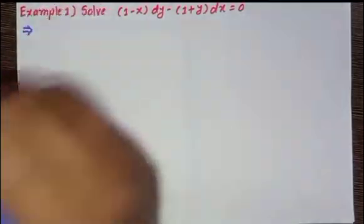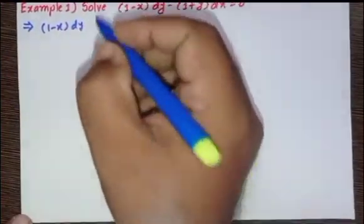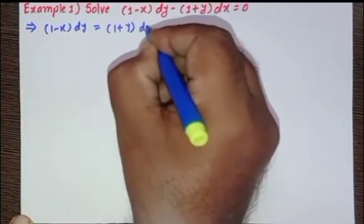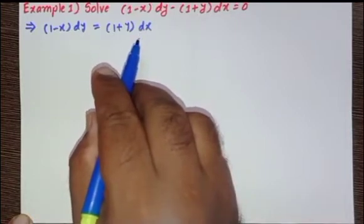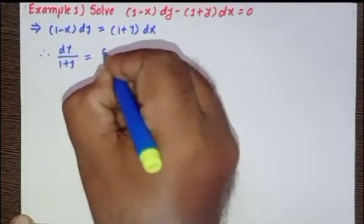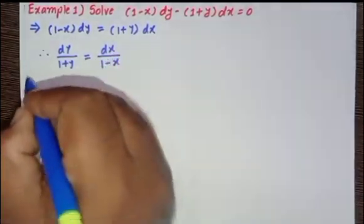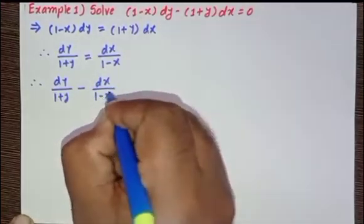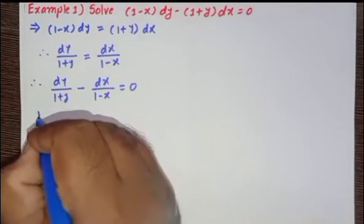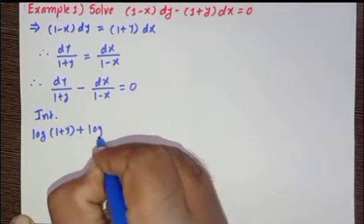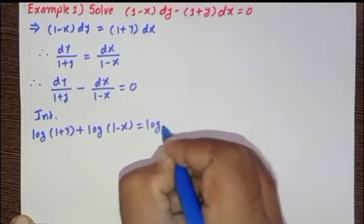Solution: we can write this as (1 - x)dy = (1 + y)dx. Now, separating the variables, we get dy/(1 + y) = dx/(1 - x). Therefore, dy/(1 + y) - dx/(1 - x) = 0. Integrating this, we get log(1 + y) + log(1 - x) = log c.